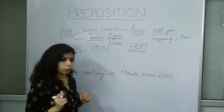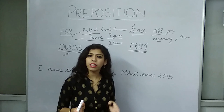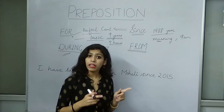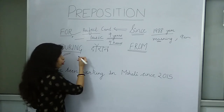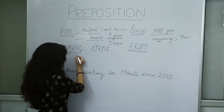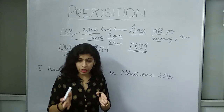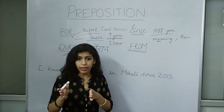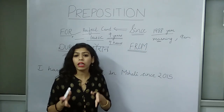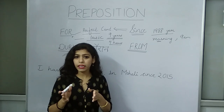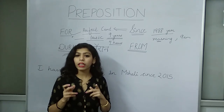Now we are coming to 'during.' For example: it has been raining the whole day — it is raining since morning — but it stopped during the night. So I have used both 'since' and 'during' here. 'It has been raining since morning' — since is used for the starting point. 'But it stopped during the night' — during is used for that particular period or duration.